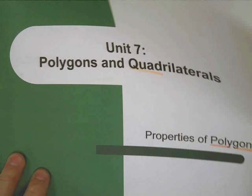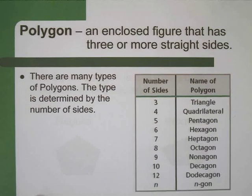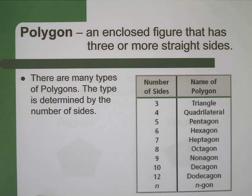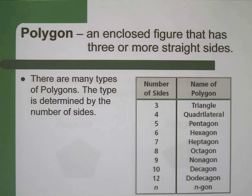So, first things first — what is a polygon? A polygon, by definition, is an enclosed figure that has three or more straight sides. The important parts of that definition are as follows.